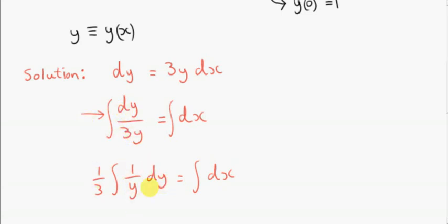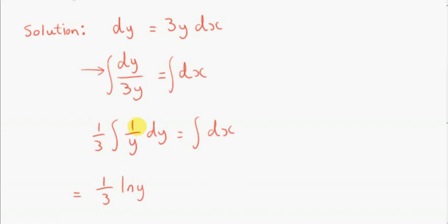dy over y is just 1 over y times dy. So on the left-hand side, we have to integrate 1 over y with respect to y. Now, 1 over y is a special function. You do not write it as y to the minus 1 and attempt to integrate by adding 1 to the power — you'll end up with division by 0, which is undefined. So you can just look this one up: it's log to the base e of y. We get an arbitrary constant, but we can bring that over to the right-hand side and combine it with the arbitrary constant from the right-hand side, giving a single arbitrary constant on the right.